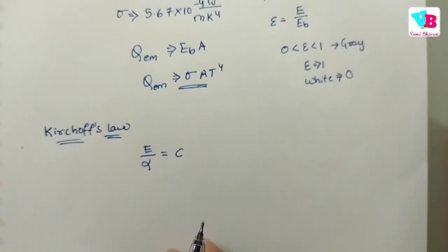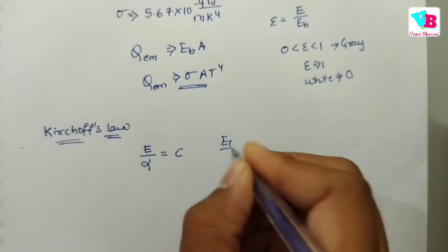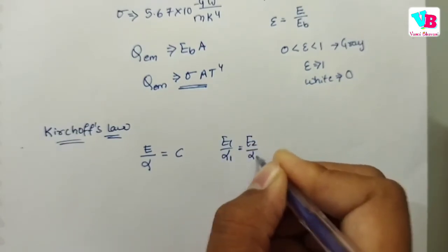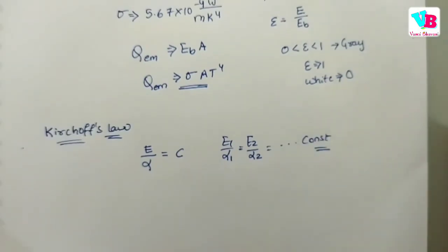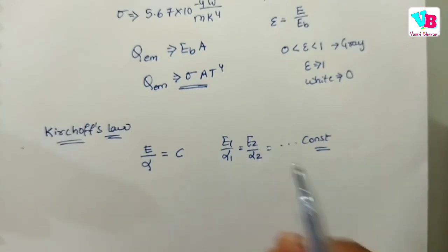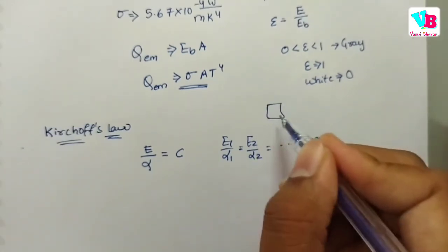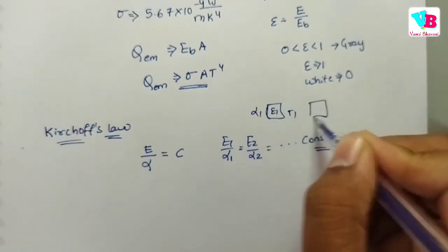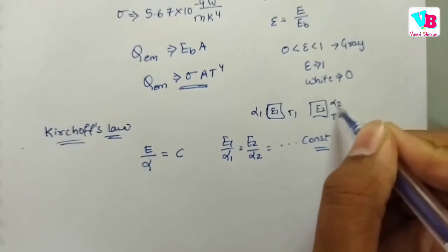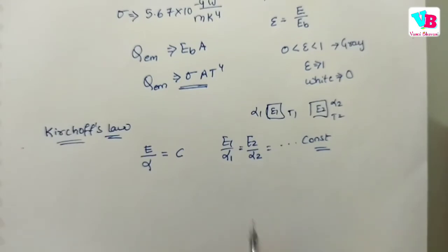What we are doing is: at constant temperature, E1 divided by alpha1 equals E2 divided by alpha2, and so on. I take a certain temperature T1 with emissive power E1 and absorptivity alpha1. At temperature T2, the emissive power is E2. So this is the definition of Kirchhoff's law.